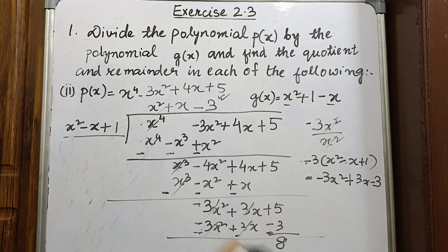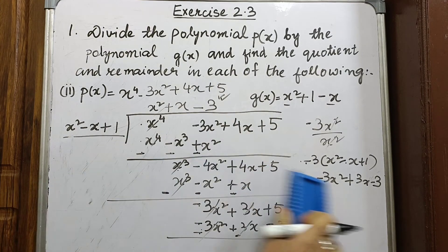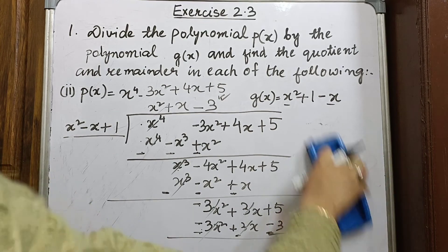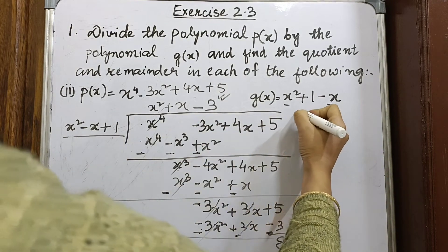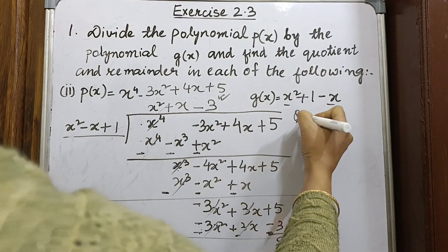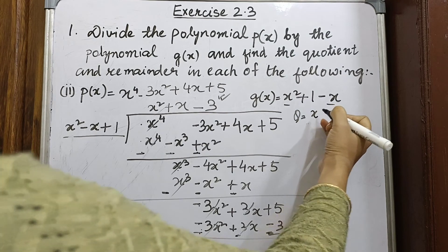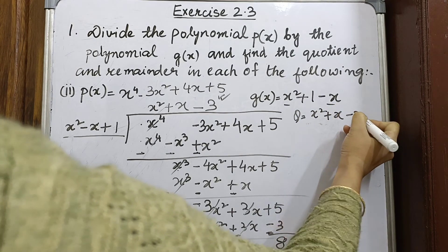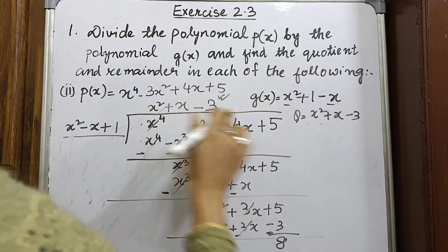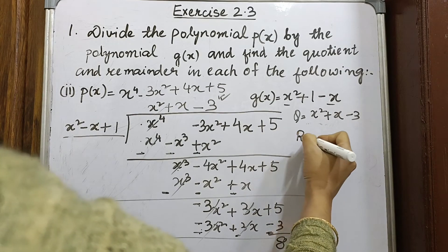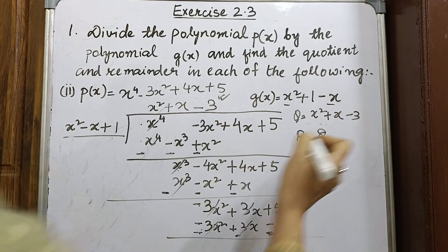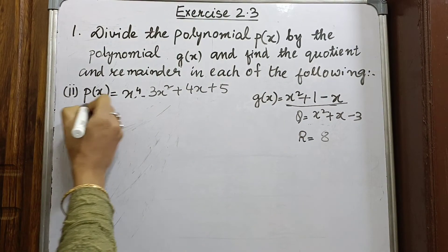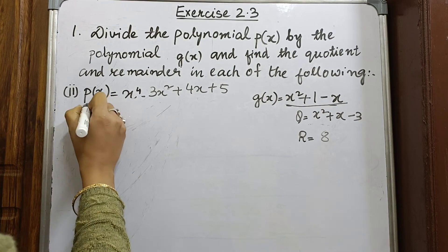So we have the quotient as x² plus x minus 3 and the remainder is 8.